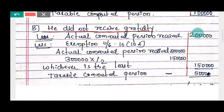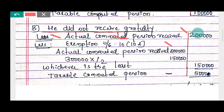Same for Case B — if he did not receive gratuity. The actual computed pension received is rupees two lakh. Under Section 10, sub-section 10A, when gratuity is not received, the exemption is one-half of the computed full value of pension. So we calculate one-half of three lakh.